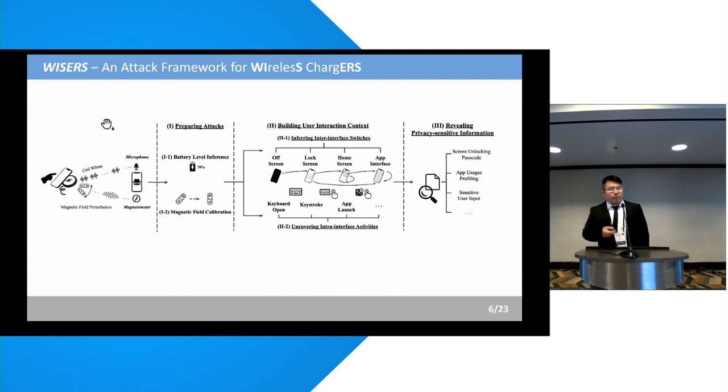Therefore, based on these observations, we propose WISERS, a novel attack framework to attack wireless chargers to uncover user privacy from charging smartphones. It consists of three stages. First, an attacker can use a smartphone with its built-in microphone and magnetometer to capture coil whine and measure magnetic field perturbations. In the first stage, we need to prepare the attack, including the battery-level inference and magnetic field calibration. Then in the second stage, WISERS builds user interaction context by first inferring the inter-interface switch across different screens and uncovering intra-interface activities, including keyboard-open detection, keystroke inference, and app-launching recognition. Finally, in the third stage, WISERS reveals privacy-sensitive information, including screen-unlocking passcodes, app usage profiling, and sensitive user input.